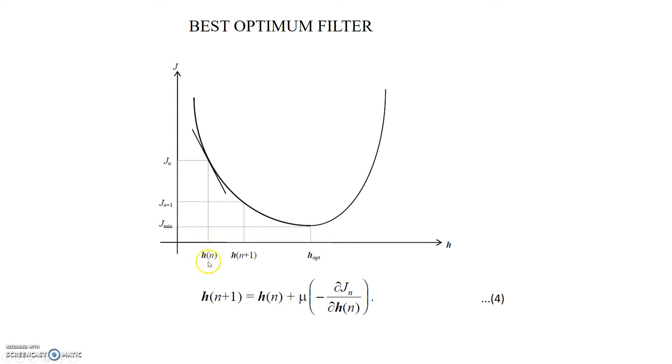Let's say if we are at time equal to n, that is we are having h(n). To move towards h optimum, we need to add the slope of this error in h(n), then we will get h(n+1), the updated coefficient.